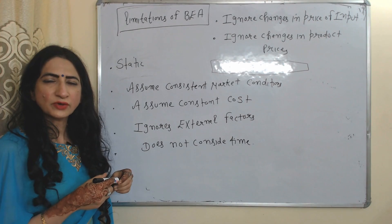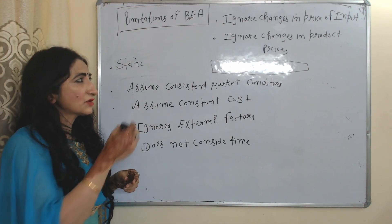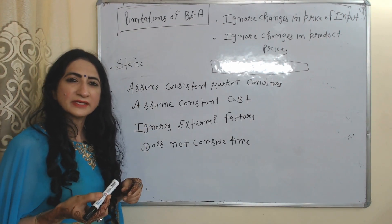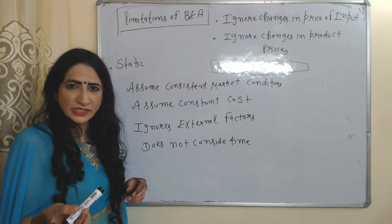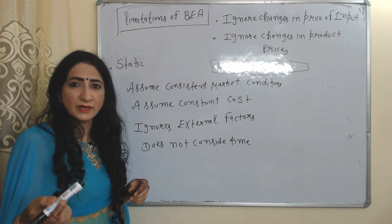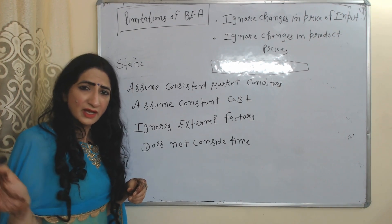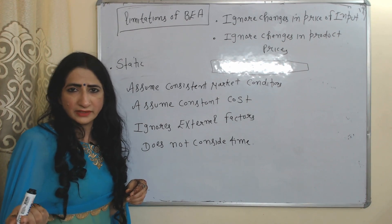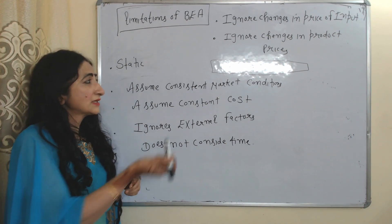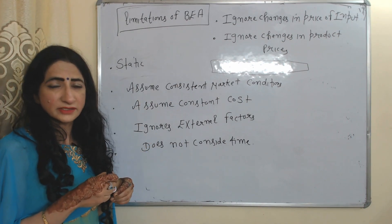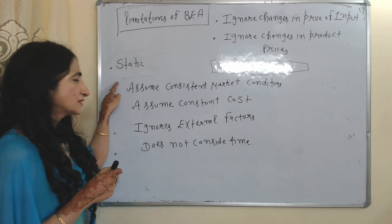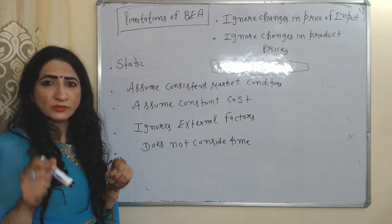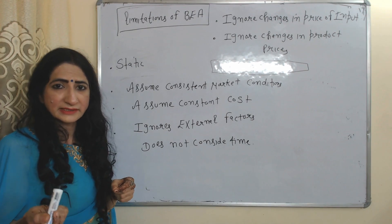Now we'll see the limitations of breakeven analysis. First, it ignores changes in the price of inputs — prices of inputs such as labor or materials are continuously changing, but breakeven analysis ignores these changes. Similarly, it also ignores changes in the prices of the product. This is a very static analysis because it assumes a constant relationship between sales quantities and cost.